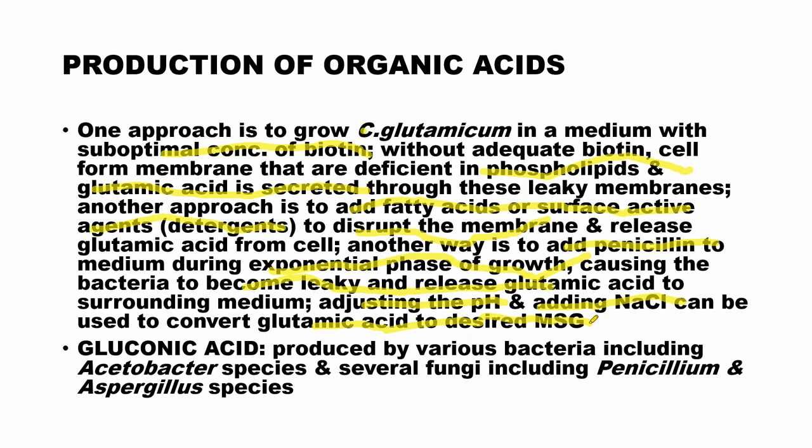Adjusting the pH and adding NaCl can be used to convert glutamic acid to MSG. Once glutamic acid is produced in sufficient quantity, we can adjust the pH or add sodium chloride in a particular concentration, and this glutamic acid can be converted into MSG — monosodium glutamate — which is the trade form of glutamic acid.